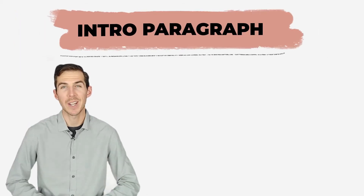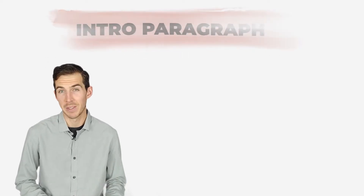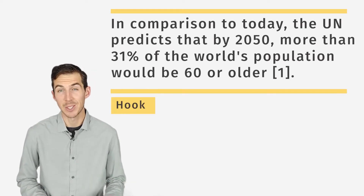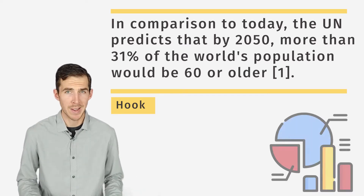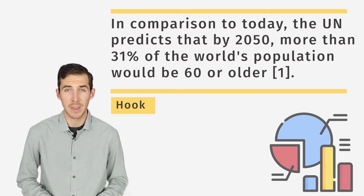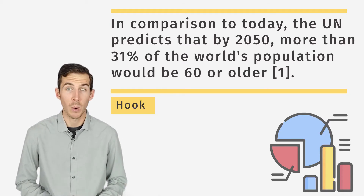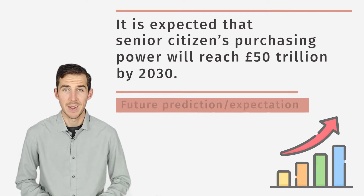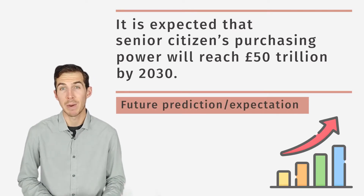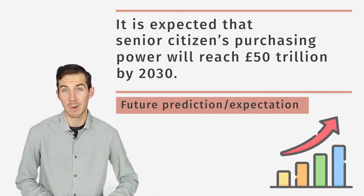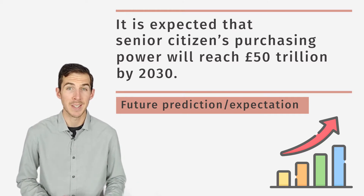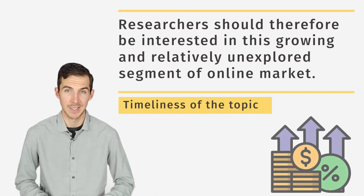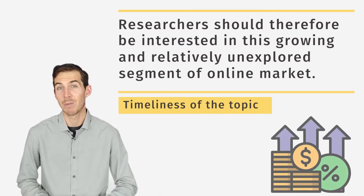Let's start with the introduction paragraph. This is where you provide a general overview of the topic. It begins with a strong opening statement, normally called a hook, since you are trying to hook your readers to your paper. Here we are providing some interesting numbers about the elderly population — by the year 2050, more than 30% of the world's population will be over 60. Then we follow it up with a future prediction that the spending power of the elderly population will increase significantly in the next few years. This is a fantastic way to emphasize the importance of the topic and highlight its timeliness — that this is a hot topic that has not yet been fully explored.